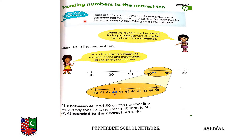Numbers go to the nearest 10 — we round off. There are 47 clips in a bowl. Tom looked at the bowl and estimated that there are about 50 clips. Another person estimated that there are about 40 clips. Who gave a better estimate? We are finding a close estimate of its value — we take the closest number to the actual value.